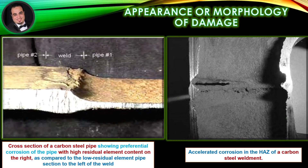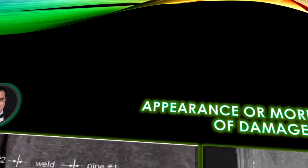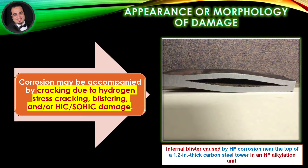As illustrated in figures, examples of hydrofluoric acid corrosion are shown. Corrosion may be accompanied by cracking due to hydrogen stress cracking, blistering, and/or hydrogen-induced cracking and stress-oriented hydrogen-induced cracking damage.